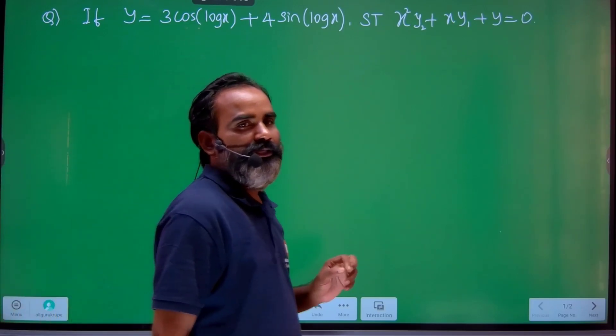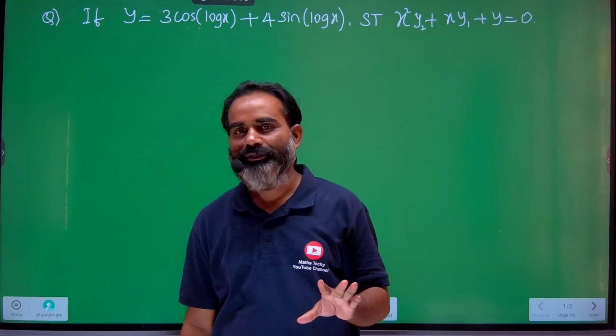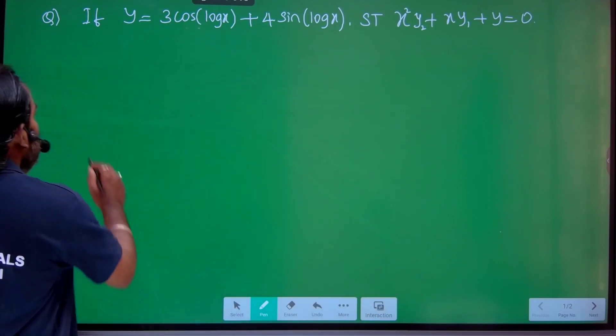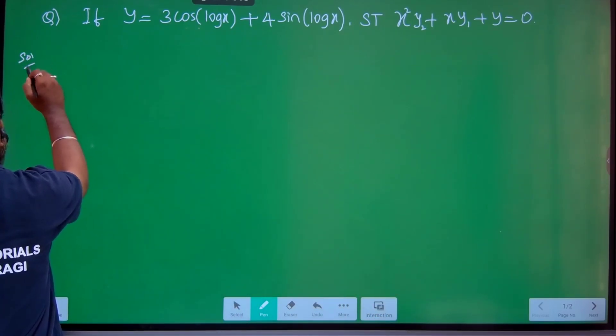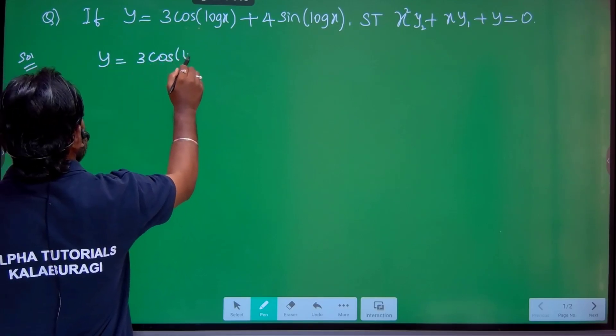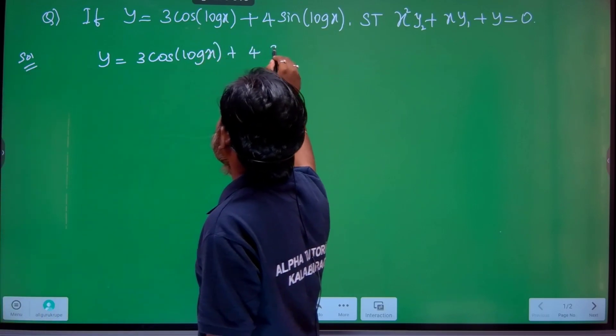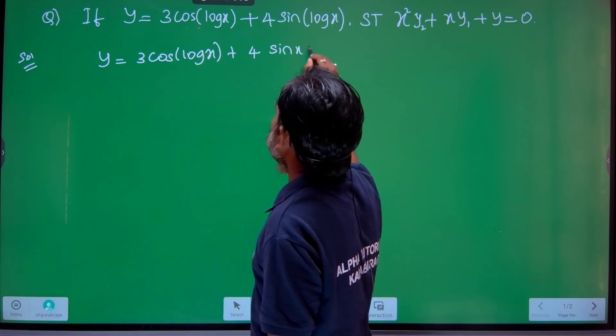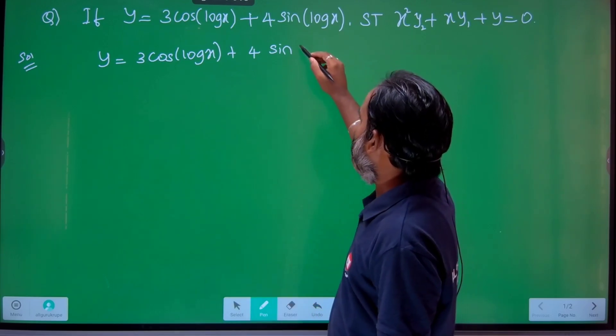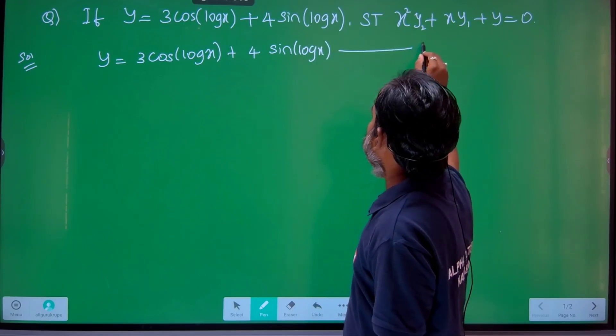Rotation problem, usually from section 5.7, all problems or worked examples. Usually one question. So how to solve this problem? y = 3cos(logx) + 4sin(logx). This is the question, equation number 1.